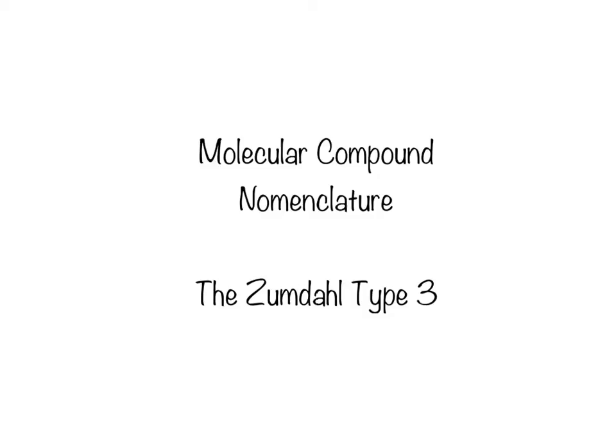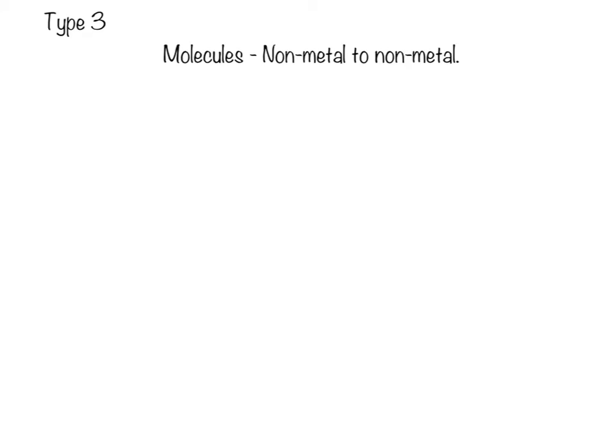All right, in this video we're going to be talking about molecular compound nomenclature, specifically the Zumdahl type 3 nomenclature. The Zumdahl type 3 nomenclature is for molecules. This is different than the type 1 and type 2, which were for ions. Molecules are formed when a non-metal reacts with a non-metal or a metalloid. So, no ions, therefore no polyatomic ions.